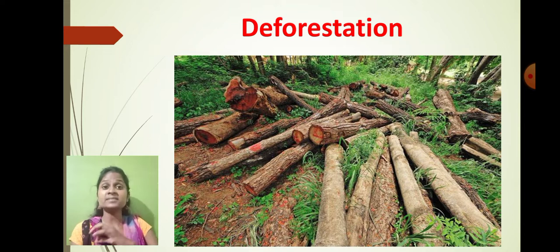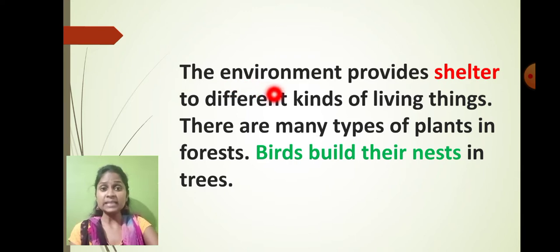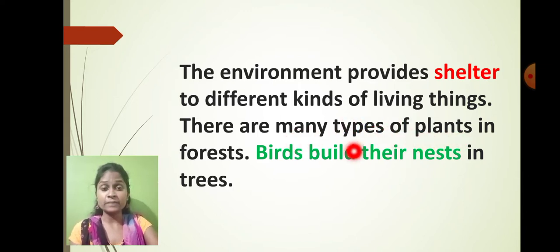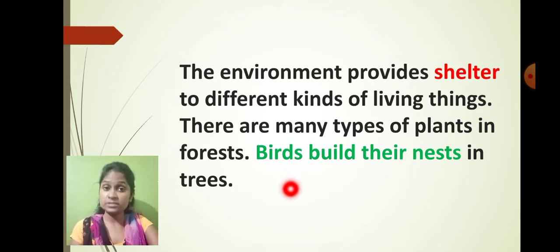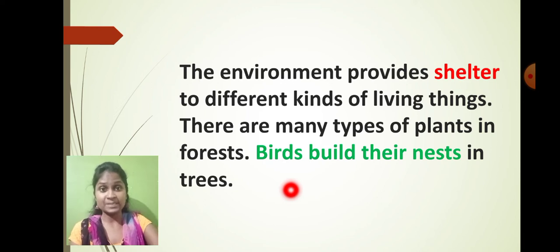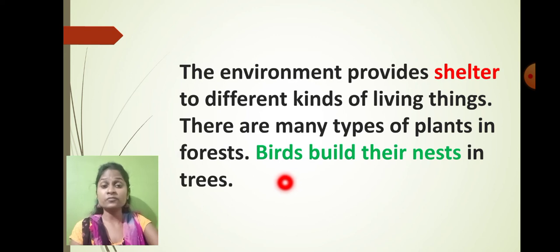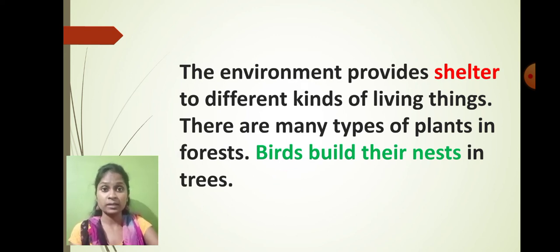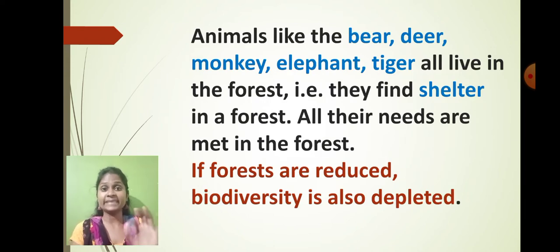Their entire system gets disturbed because of deforestation. The environment provides shelter to different kinds of living things. There are many types of plants in the forest. Birds build their nests in the trees. If we destroy the forest, we are indirectly trying to destroy the birds as well, because the forest is the place for their growth and development.